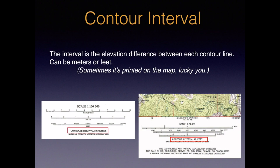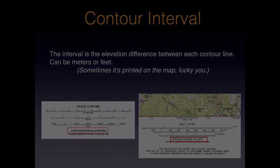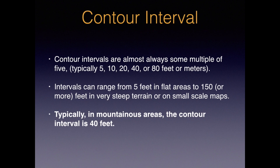Sometimes the interval is printed right on the map, and sometimes you have to figure it out for yourself. Contour intervals are almost always multiples of 5, typically 5, 10, 20, 40, or 80. The interval chosen by the mapmaker depends on how steep the terrain is. Intervals can range from 5 feet in very flat areas, like Florida, to 150 or more feet in very steep terrain or on a small-scale map. Usually in mountainous areas, the interval is 40 feet.